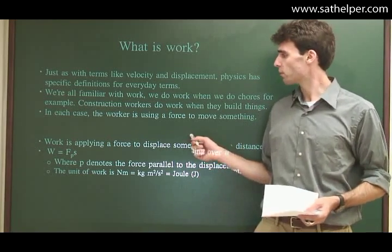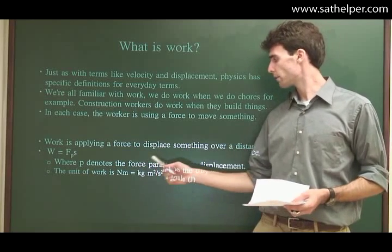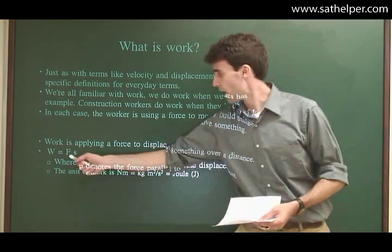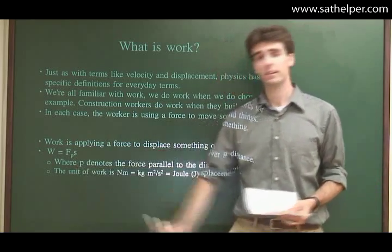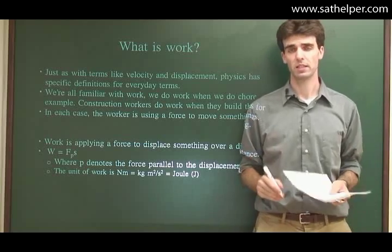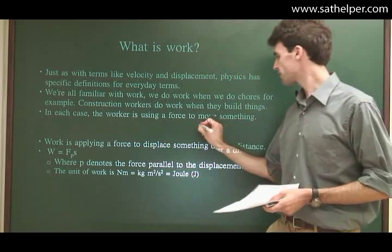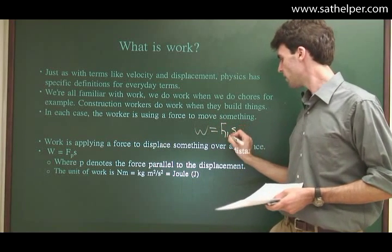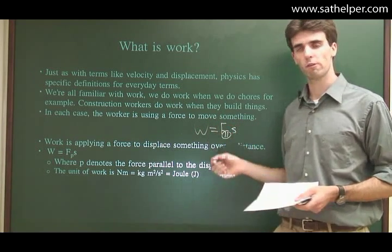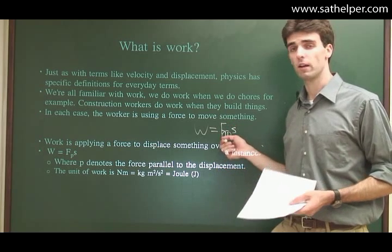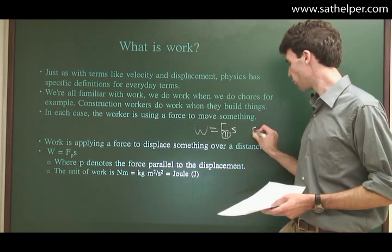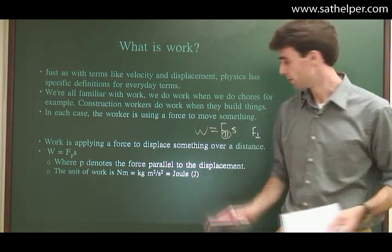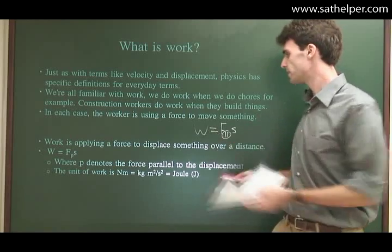So what we're going to define work in physics is applying a force to displace some object over a distance. And the equation I'm going to write as F sub P times S, where P denotes the force parallel to the displacement. That's important. So I'm also going to write it a lot like this: work equals F parallel S, where this little two railroad track signs there means parallel. That's as opposed to force perpendicular, where we use two perpendicular lines. And we'll also use that later on in this course.